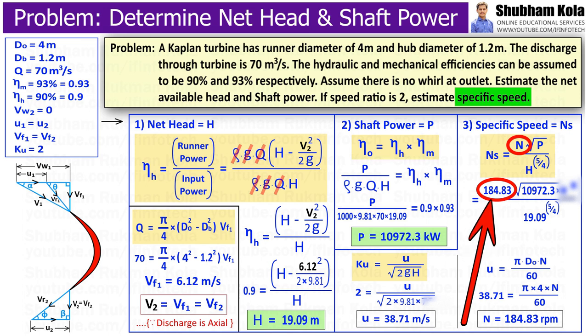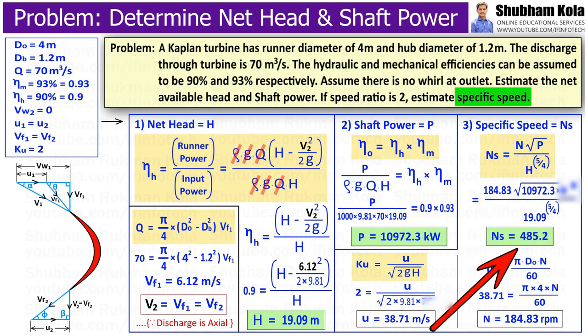Now, substituting the calculated value of N into the specific speed formula, we calculate the specific speed of the turbine as 485.2.